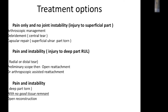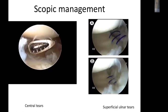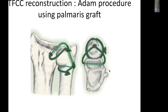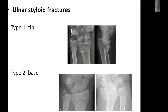If the patient has instability and a positive hook test indicating a deep tear, the TFCC must be reattached to the ulna. In long-standing cases, reconstruction is needed if remaining TFCC tissue cannot hold sutures. Options include arthroscopic capsular repair, open reattachment using trans-osseous sutures or suture anchors, and TFCC reconstruction of the radioulnar ligament using a free tendon graft.